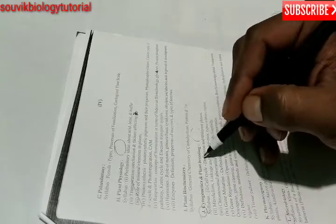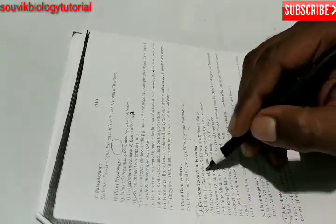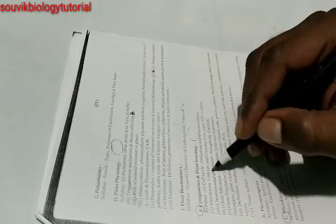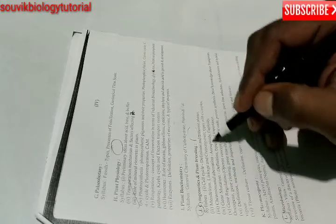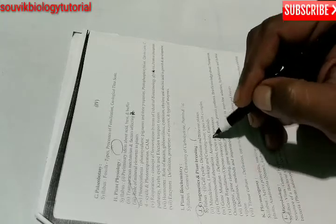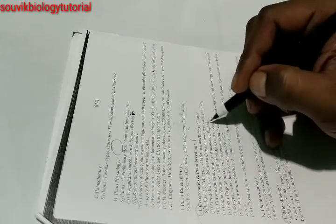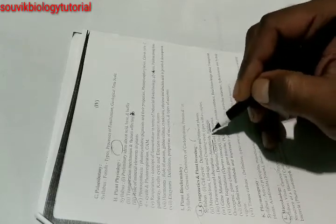Next plant biochemistry. Syllabus is general chemistry of carbohydrate, protein and fat. Next is cytogenetics and plant breeding. Syllabus includes the cell cycle definition and different phases, Mendelism, linkage and crossing over types with examples, chromosomal aberration and aneuploidy. You may also see my videos regarding euploidy and aneuploidy.